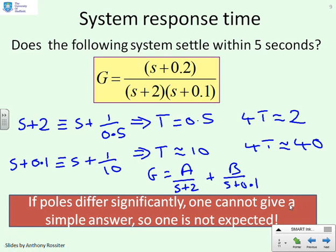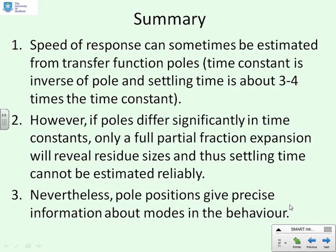So here's the summary. If poles differ significantly, you cannot give a simple answer. So in general, no one's going to expect one. So in summary, the speed of response can sometimes, and we emphasize that, sometimes be estimated from transfer function poles. The time constant is the inverse of the pole. Let's not worry about the minor signs and things. And the settling time is about 3 to 4 times the time constant for the corresponding mode.